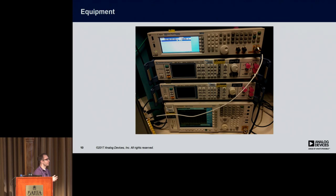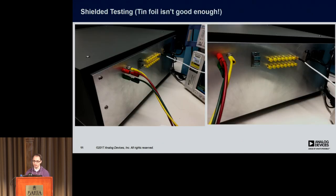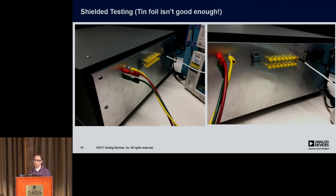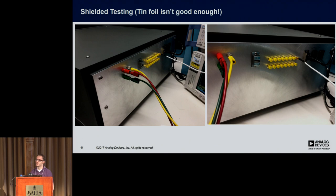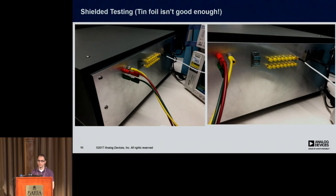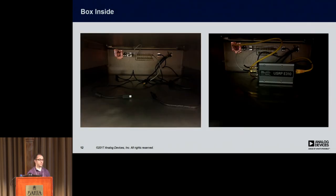This is an example of some of the test equipment we had set up — just a couple of signal generators and a data capture PXA. Tinfoil shielding is not enough. This is a test box we use because originally we did it open in the lab and had huge spikes at 2.4 and 5.8 GHz — I wonder why. So we had this box built. In the meantime, since it takes time for the shop to build things, we put a shoe box with tinfoil around it, and it did a lot better. Here's a picture from inside with an E310 setup being tested.